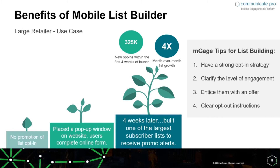Number two: clarify the level of engagement. This is a really important one because companies that are open and honest about expectations from signing up generally have better results. The customer knows what they're getting into and doesn't sign up only to opt out two days later. Some of the best ones I've signed up to have said you should expect maybe three to four messages a month — that draws users in and reassures them they won't be flooded with messages, while still keeping them invested.